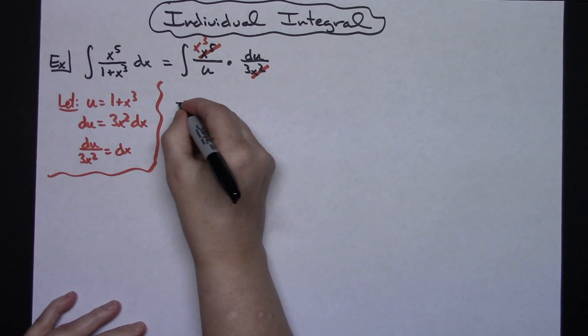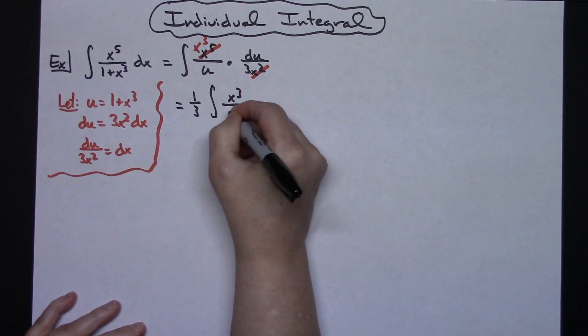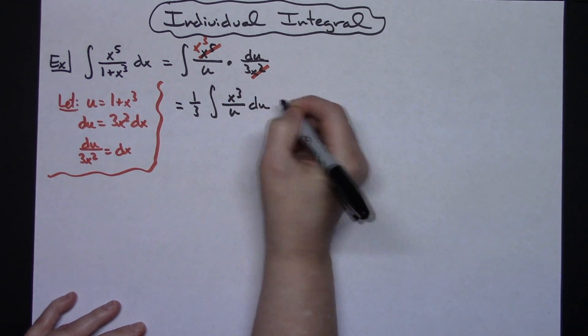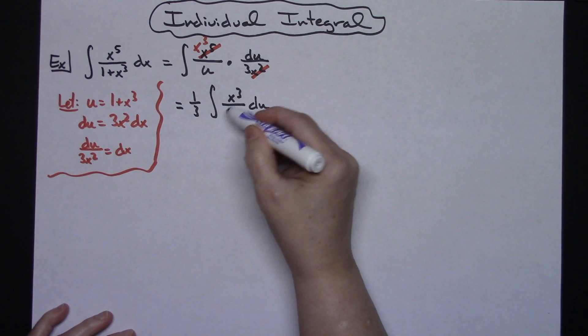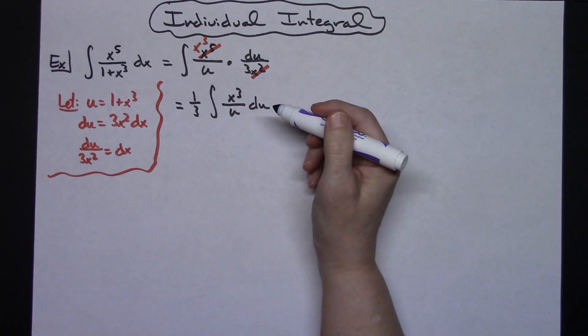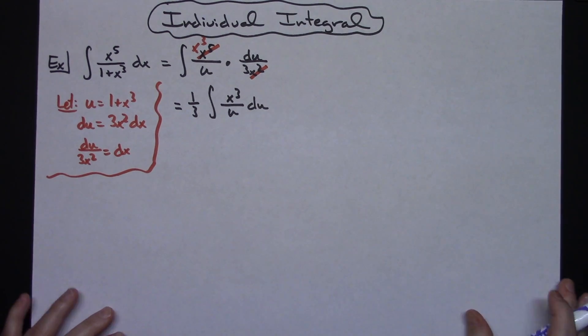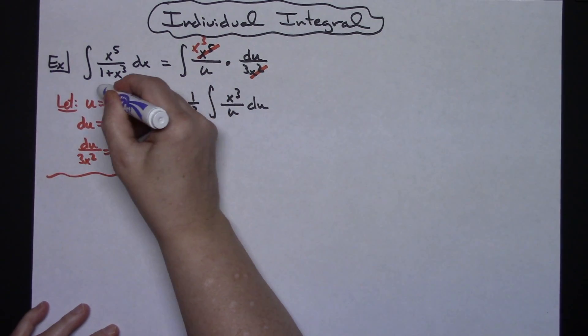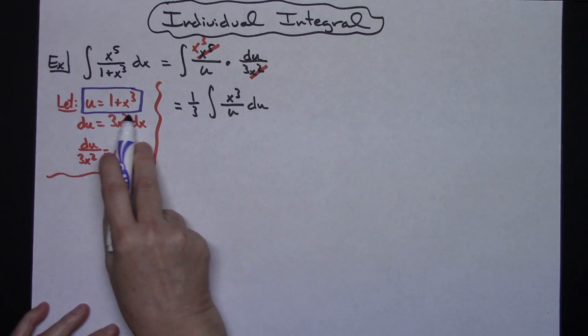Let's go ahead and pull the 1/3 out. If I pull that 1/3 out I'll have the integral of x to the third over u du. At that point we're not done yet, we can't do anything here because we've got to make sure of x's and u's in here. Whenever that happens, all your x's don't fall out, then you've got to figure out how to get rid of some of them.